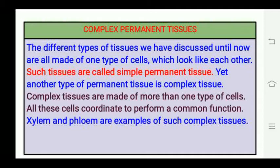Today we start our topic: complex permanent tissues. Unlike simple permanent tissues which are made up of one type of cells, complex tissues are made up of more than one type of cells. All these cells work together and coordinate to perform a common function. The examples of complex tissues in plants are xylem and phloem.